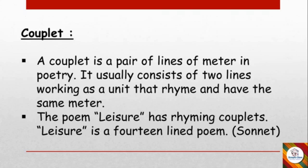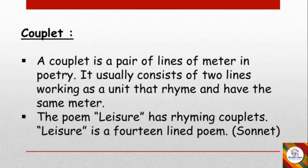This poem is a couplet kind of poem. A couplet is a pair of lines of meter in poetry — it usually consists of two lines working as a unit that rhyme and have the same meter. 'Leisure' has rhyming couplets, is a 14-line poem, and is called a sonnet. So we have seven pairs, meaning 14 lines in total.